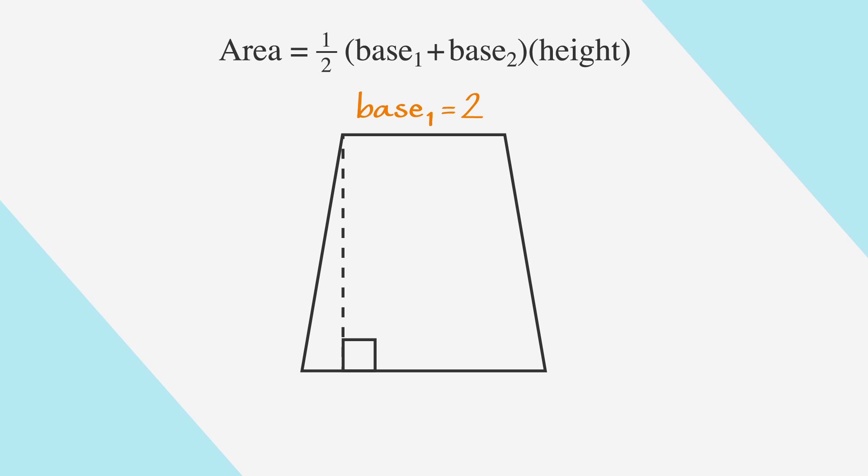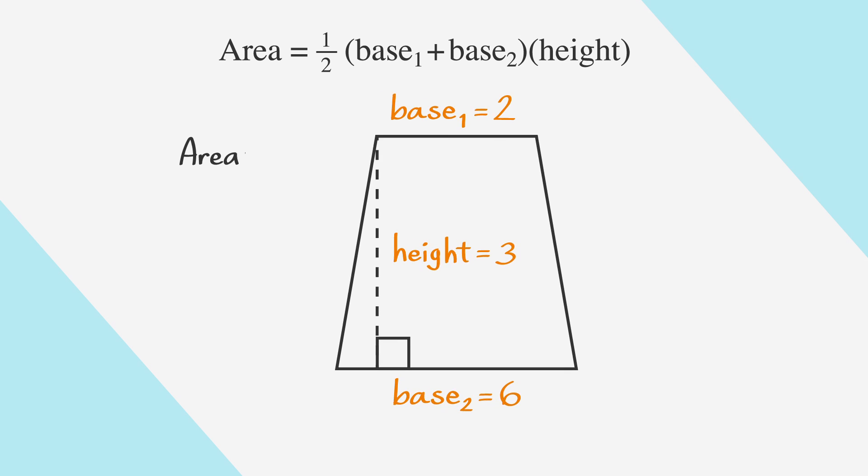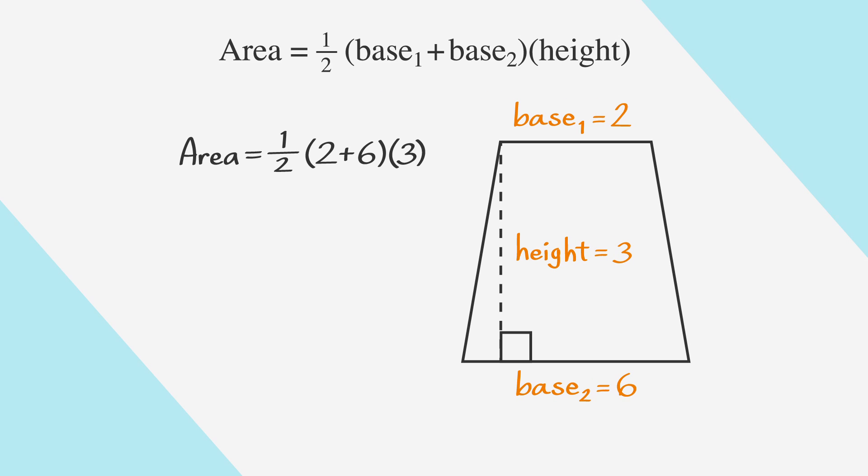Let's say that base 1 is 2 and base 2 is 6 and the height is 3. All we need to do is plug our values into the area equation. So we'll put in 1 half times 2 plus 6 times 3 and get 1 half times 8 times 3, which is 12.